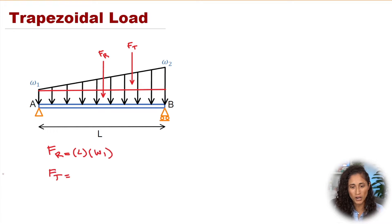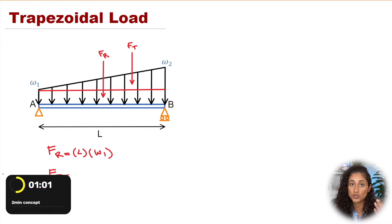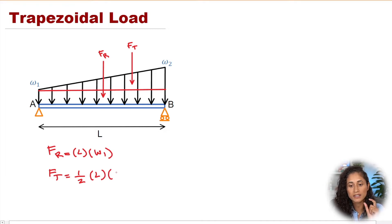For the force of the triangle, we do the same thing. We take the area of the triangle, which is 1/2 times B times H. The base is again the length of the beam. And for the height, this is where you need to be careful.